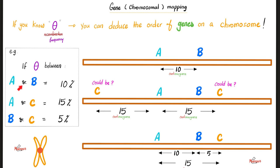Let's go. They told you that A and B are ten centimorgans, so you just draw A and B with a distance between them of ten centimorgans. Next, between A and C, it's fifteen percent. Between A and C, there is fifteen percent, i.e. fifteen centimorgans.